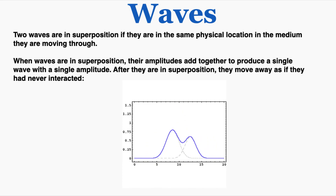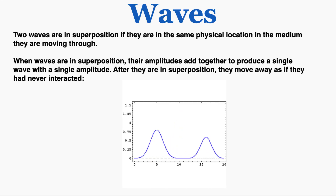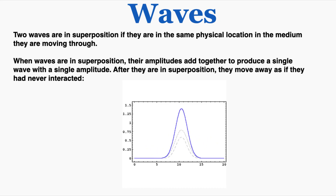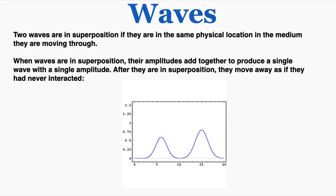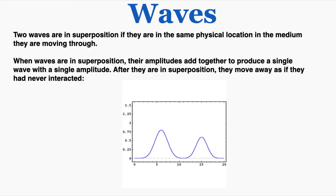You can see the smaller wave is moving to the left, and after interacting it just continues to move to the left, and the larger wave is moving to the right, and after the interaction it just continues to move to the right. The waves don't bounce off each other or interact in any way outside of their amplitudes adding together while they occupy the same region of space — that's what we mean by the superposition of waves.